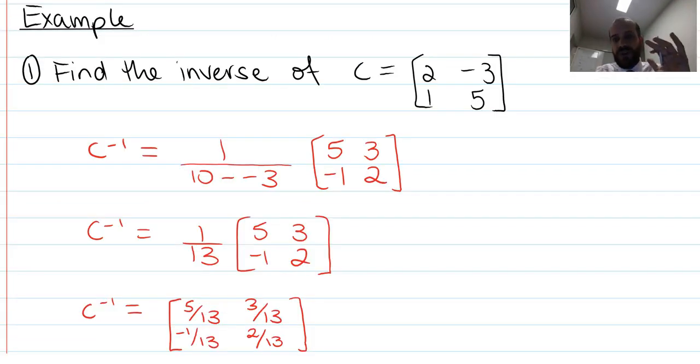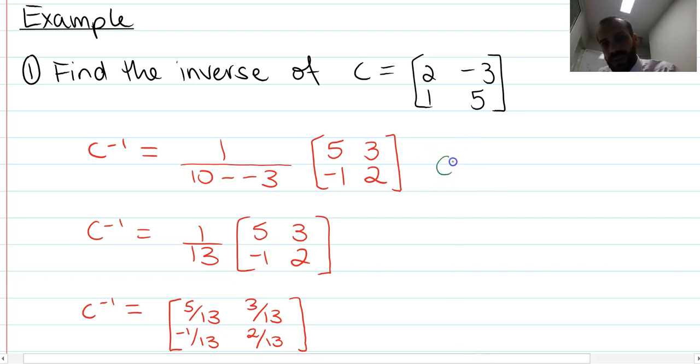Finally, here's our very concrete example. Find the inverse of, call it C, 2, negative 3, 1, 5. So the inverse of that, and I'll do it step by step here so I can talk you through it. C to the negative 1, inverse of C, is equal to, swap over the 2 and the 5. I need to make some space there. That's going to be 5 and 2.